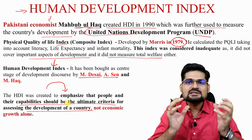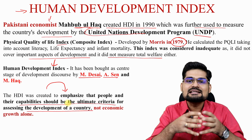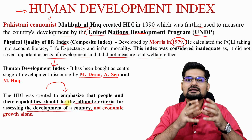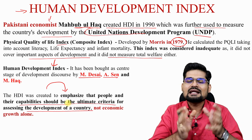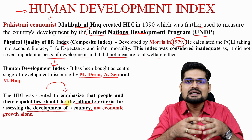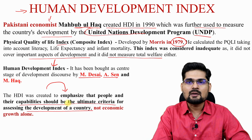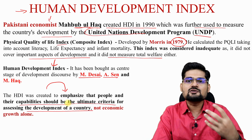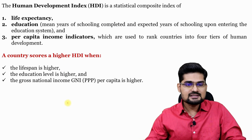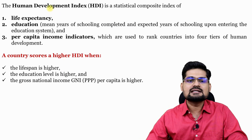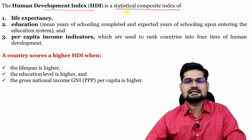This statistical composite index was an advanced form of indexing method developed after PQLI in 1979. So in 1990 when this HDI came up, what were the main factors? HDI — the Human Development Index — is a statistical composite index.